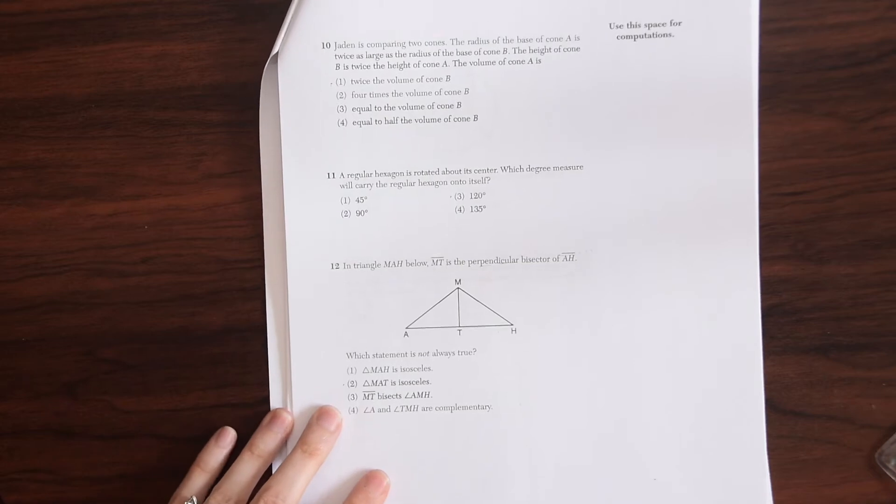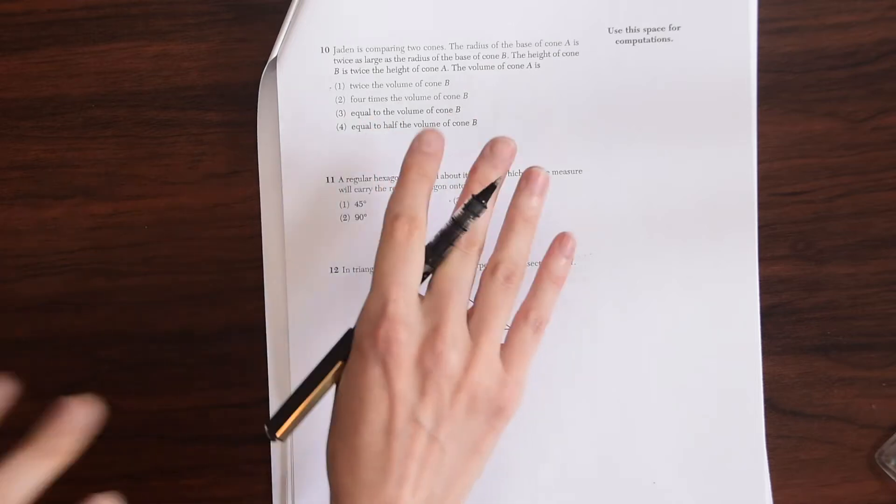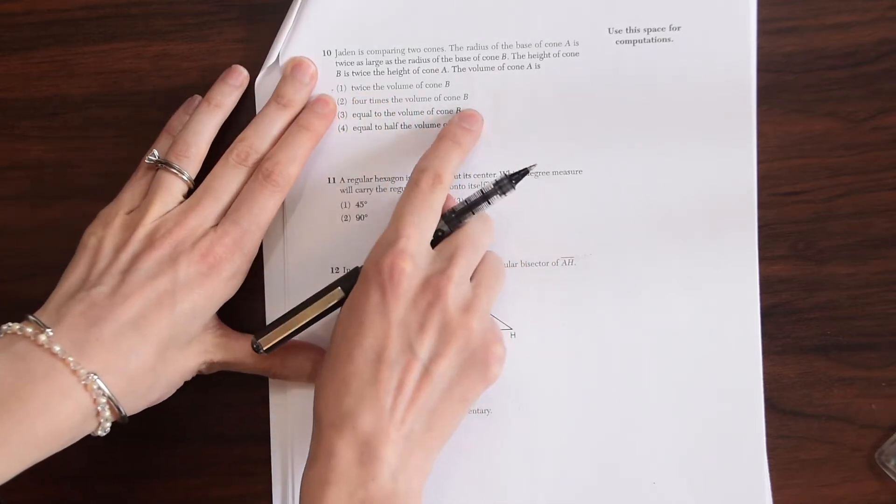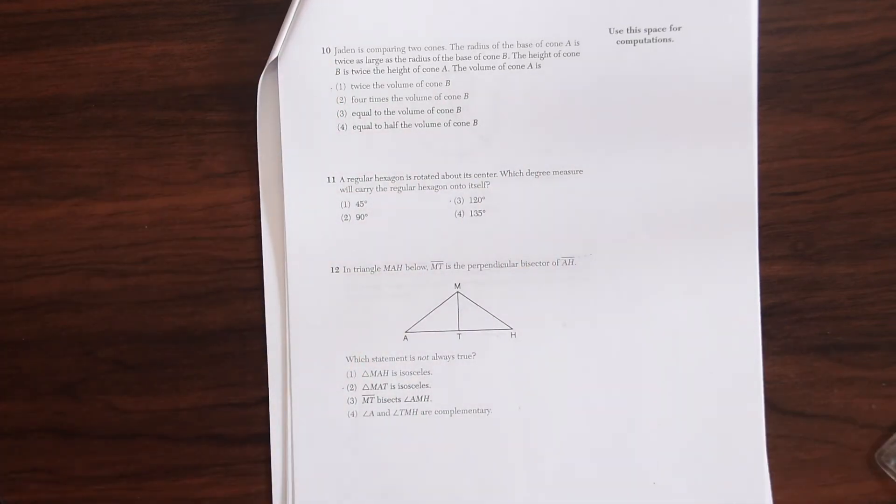Jaden is comparing two cones. The radius of the base of cone A is twice as large as the radius of the base of cone B. The height of cone B is twice the height of cone A. The volume of cone A is, and then all the choices we have here are comparing the volume of cone A to cone B. So let's just write out, let's draw and write out each of these cones on the side here.